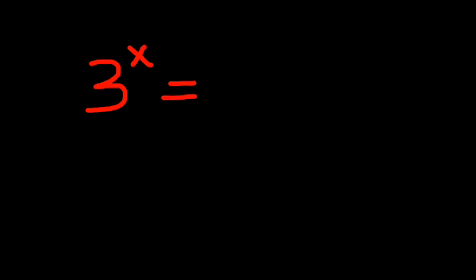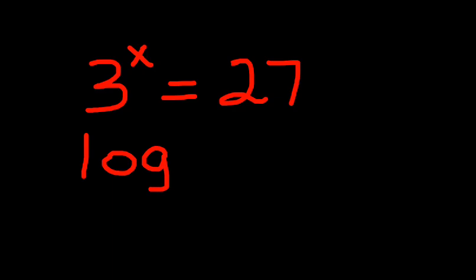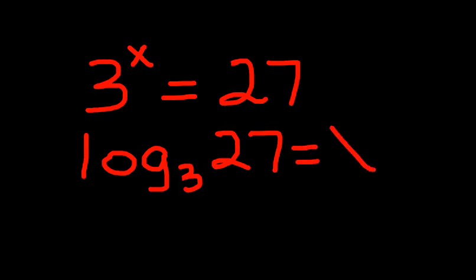Let's take a look at this example. If I have 3 to the x power equals 27, I want to know what the value of x is. By looking at this I can tell that 3 to the third power is 27, but that's what logs are here for. We can actually rewrite this into logarithmic form by saying log base 3 of 27 equals x. So when we find the log base 3 of 27, what we're really finding is the number that, when we raise 3 to that power, will give us 27. We know that x is equal to 3 because 3 times 3 times 3 is equal to 27.